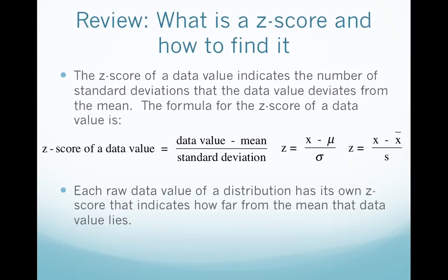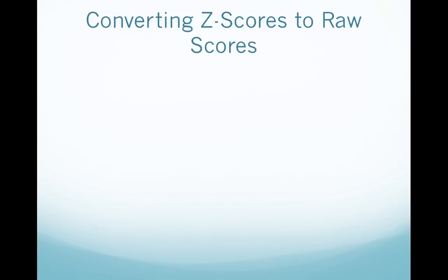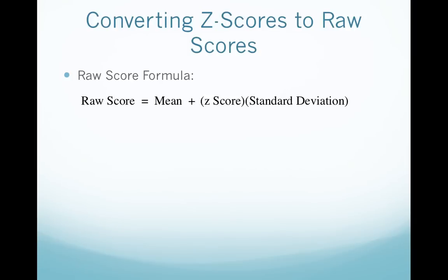Each raw data value of a distribution has its own z-score that indicates how far from the mean the data value lies. So if you have 20 data scores in a distribution, each one of those data scores has its own z-score. We are going to convert z-scores back into raw scores. Raw scores are considered to be the data values of the distribution before they've been converted to z-scores. If we want to go back, the raw score formula is simply the z-score formula solved for x: the mean plus the z-score times the standard deviation.